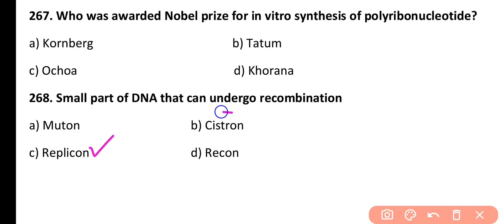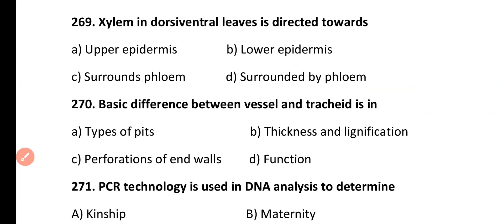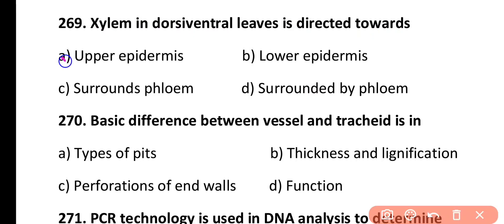Question 269. Xylem in dorsiventral leaves is directed towards: upper epidermis, lower epidermis, surrounds the phloem, or surrounded by phloem. Correct answer is Option A. In dorsiventral leaves, the xylem is directed towards the upper epidermis, while phloem is directed towards the lower epidermis.